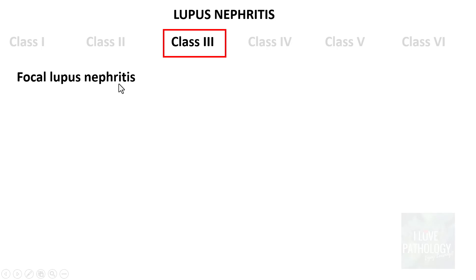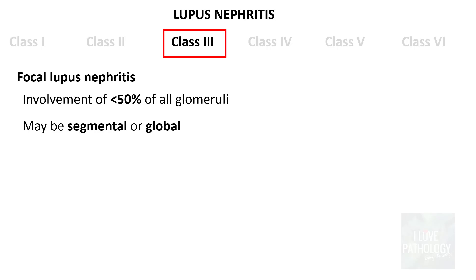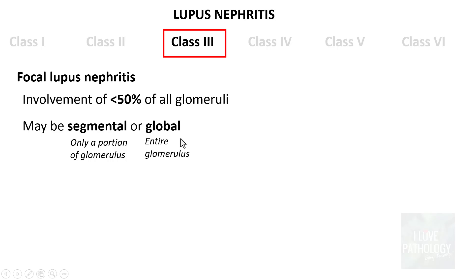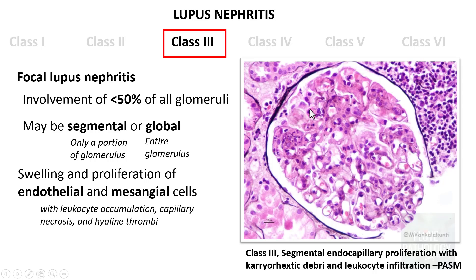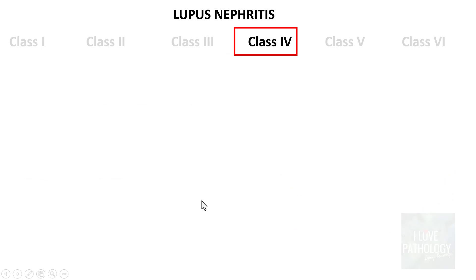Class 3 is referred to as focal lupus nephritis, meaning involvement of less than 50% of the glomeruli. Among the involved glomeruli it can be segmental or global. You find swelling and proliferation of the endothelial cells of the capillaries as well as the mesangial cells, along with infiltration by leukocytes. There can be capillary wall necrosis, hyaline thrombi in some vessels, and very rarely crescent formation if proliferation is excessive.